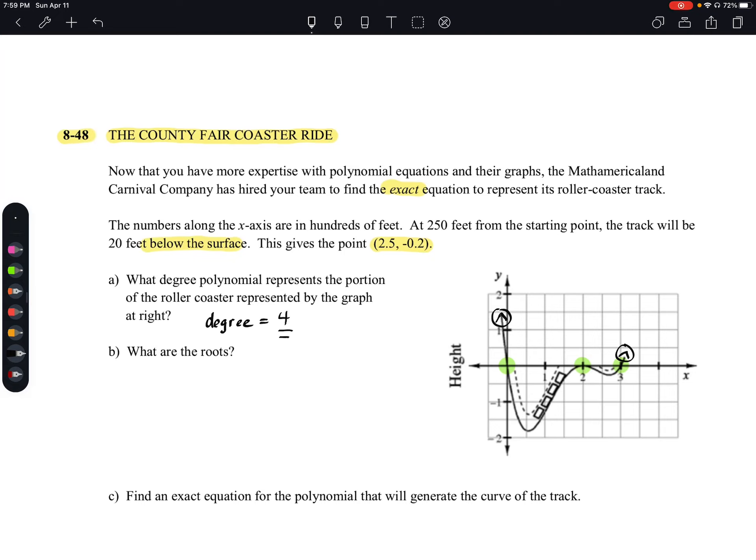Now part B asks, what are the roots? We already kind of identified where they're at. Now let's just identify what they are. We have x equals 0, x equals 2, and that one is a double root, and we have x is equal to 3.